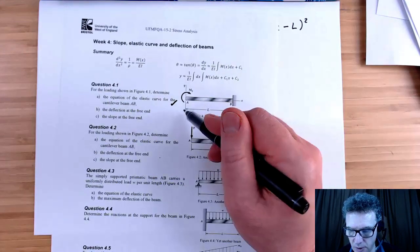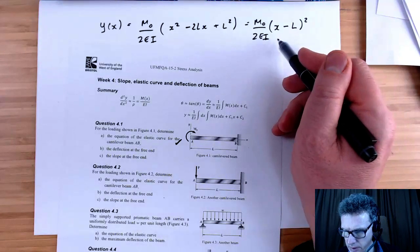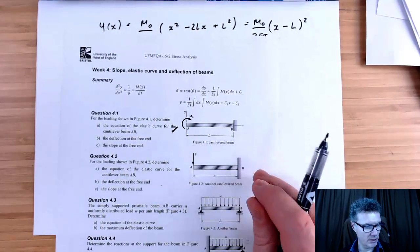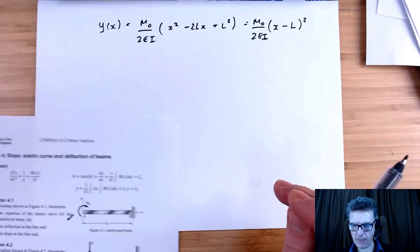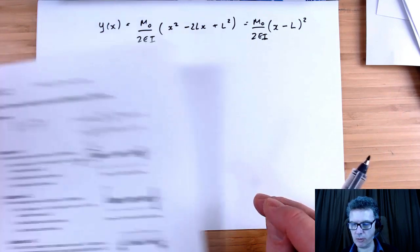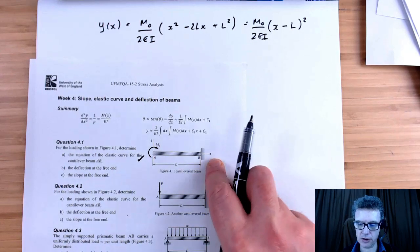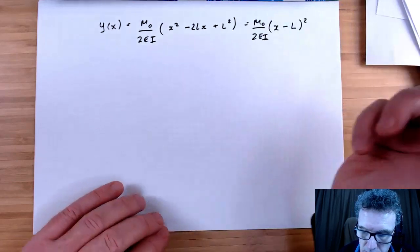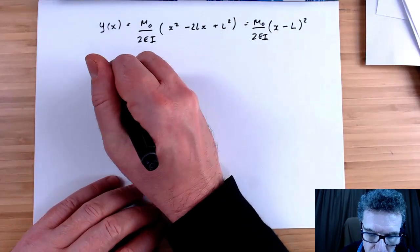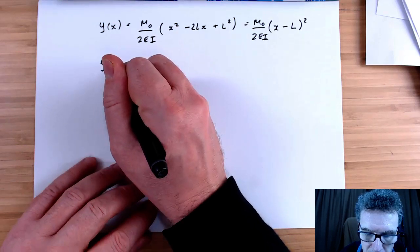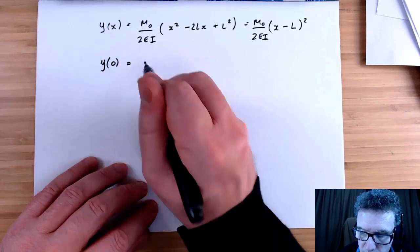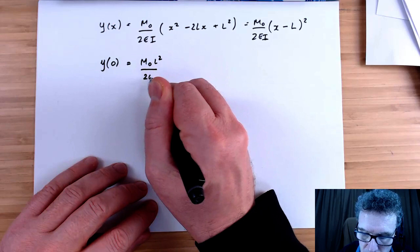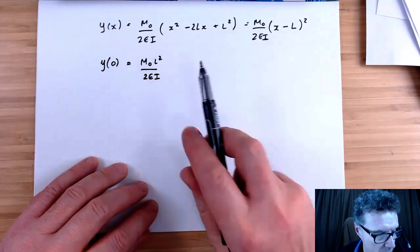Part B: what is the deflection at the free end? We're looking at x = 0. Substituting x = 0 into our deflection function, the first two terms vanish, and we get y = M₀L²/2EI. I can see that's going to give a positive value, so L is actually pointing down. That was easy.